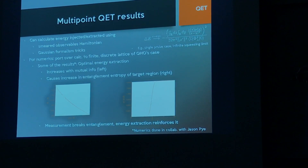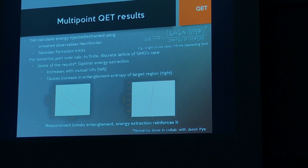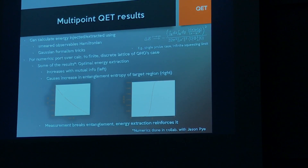A more surprising result: when you extract energy at site B, you actually increase the entanglement entropy of B with its complement. This is interesting because a good measurement breaks entanglement — if a subset is entangled with other things and you perturb it with a probe, you break that entanglement and inject energy. But when you extract energy, you actually increase the entanglement. So there seems to be a nice relation there with potentially deeper implications.